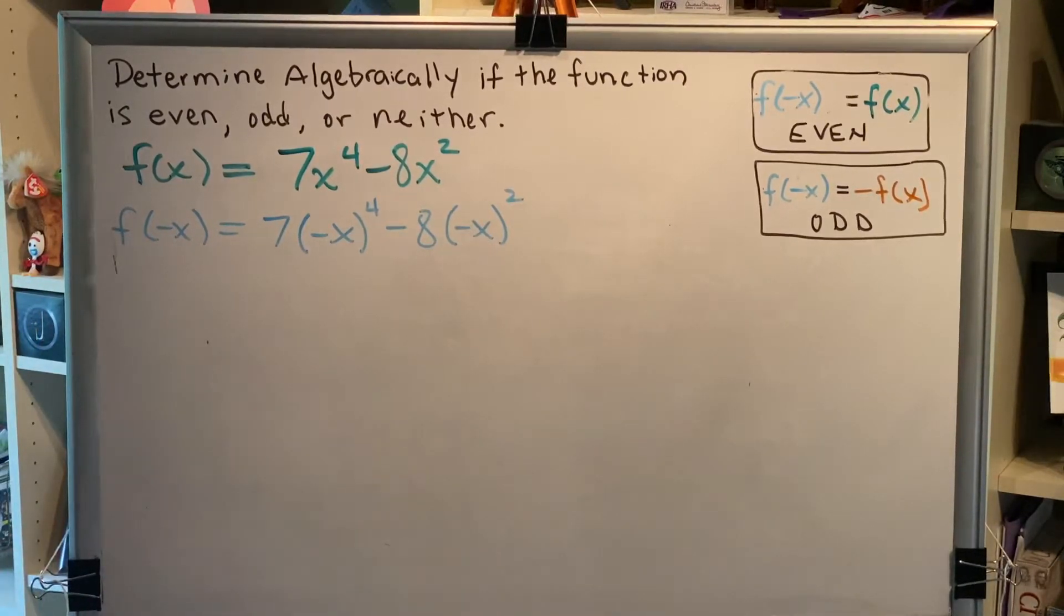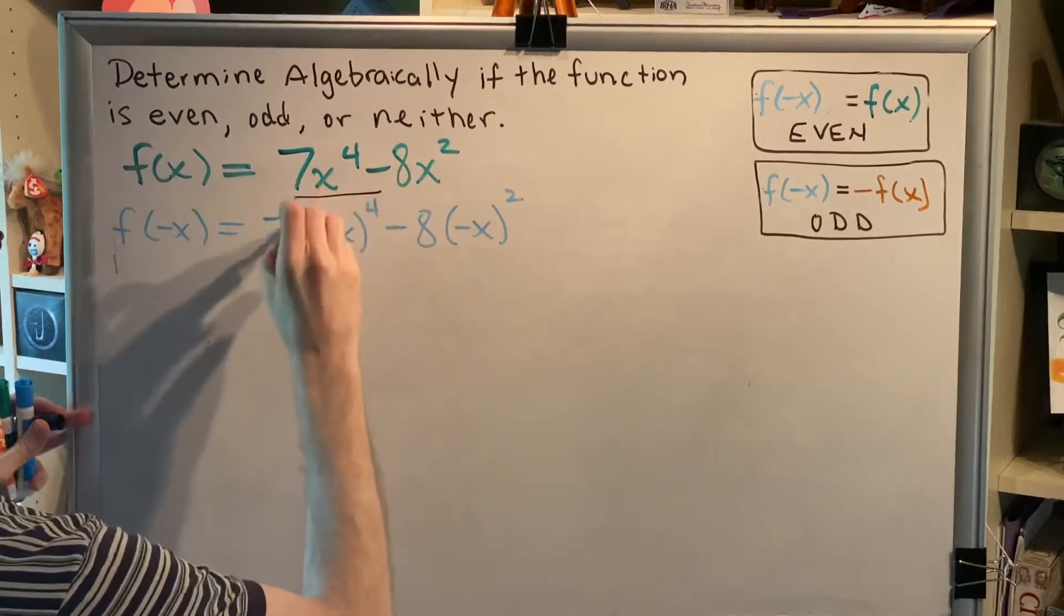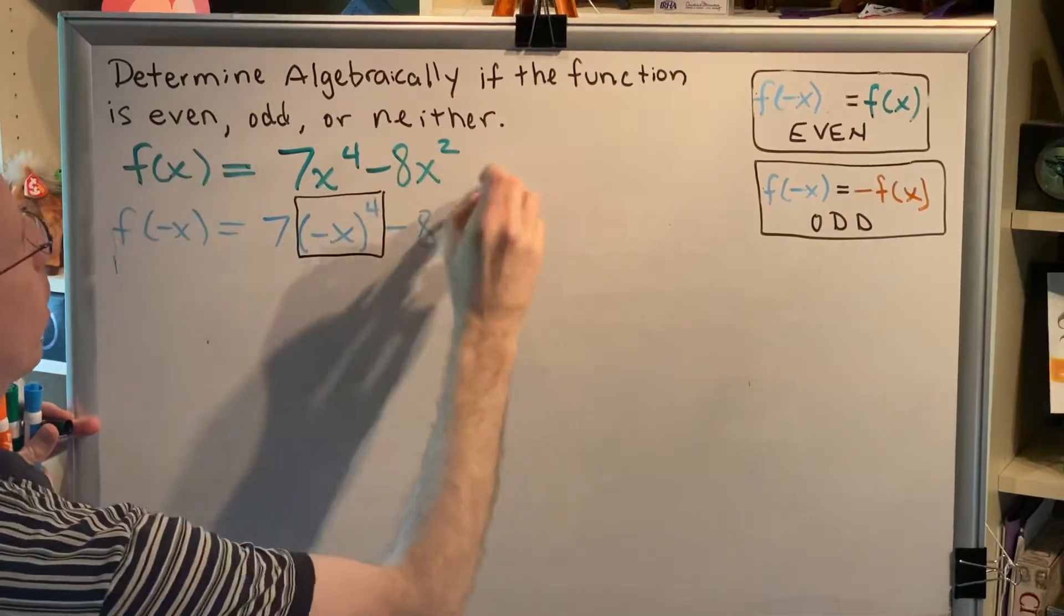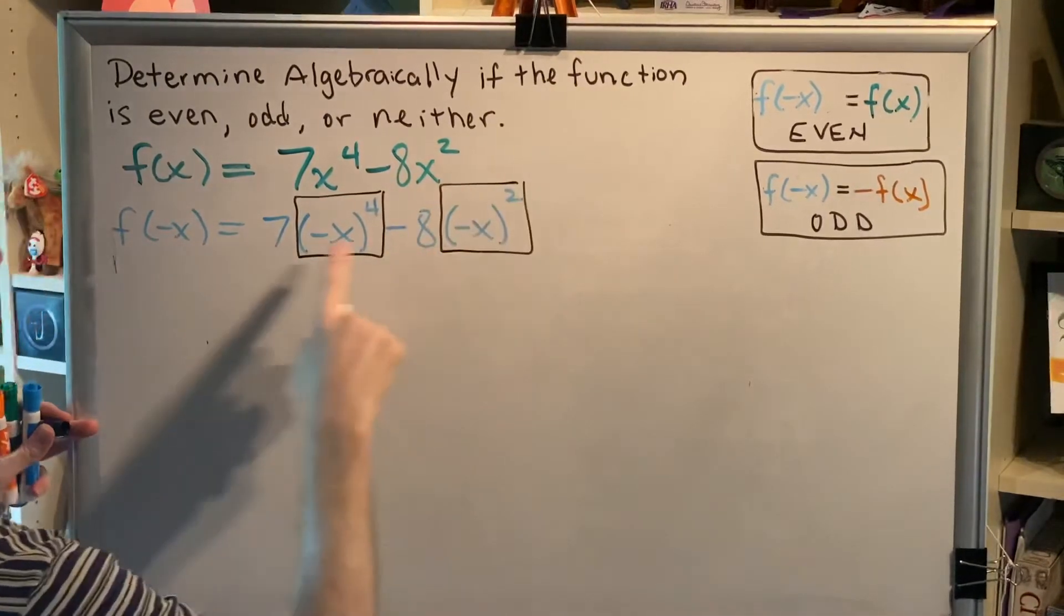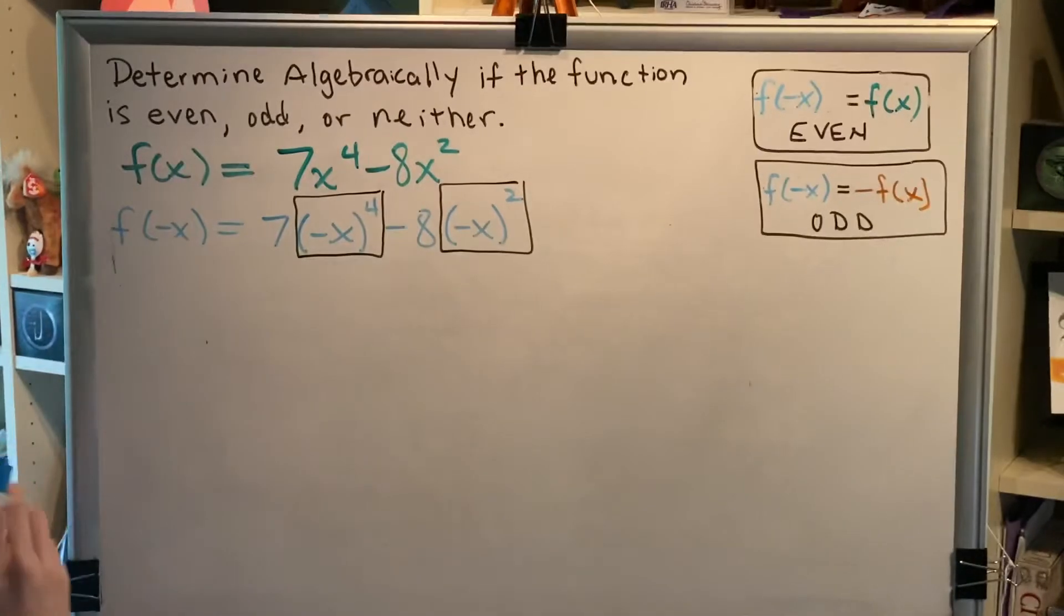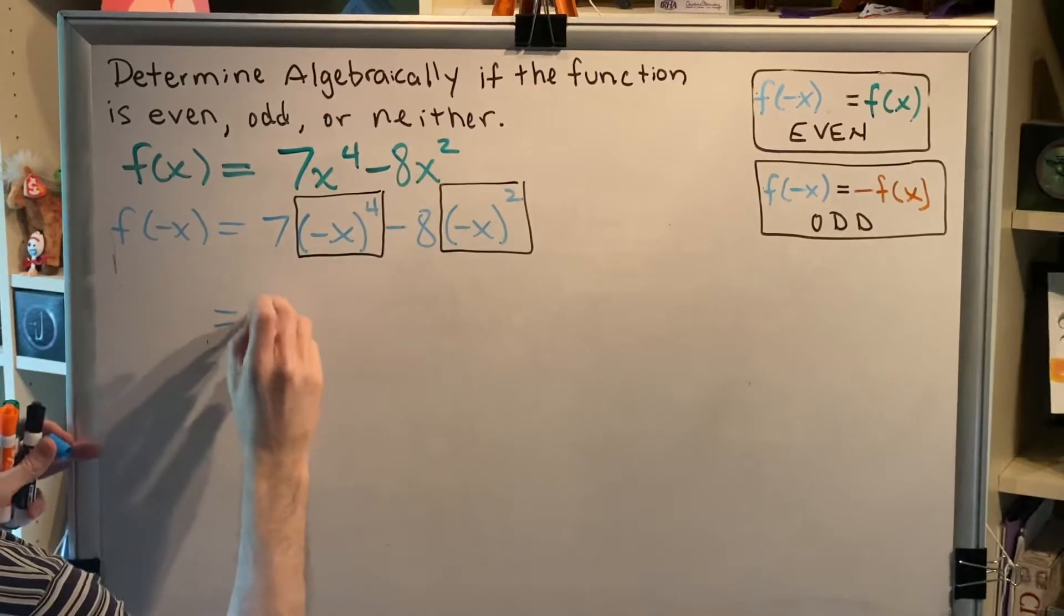Following order of operations, exponents have to happen before the multiplication or the subtraction. Alright, so let's see if we can work out what we get for those two boxes.